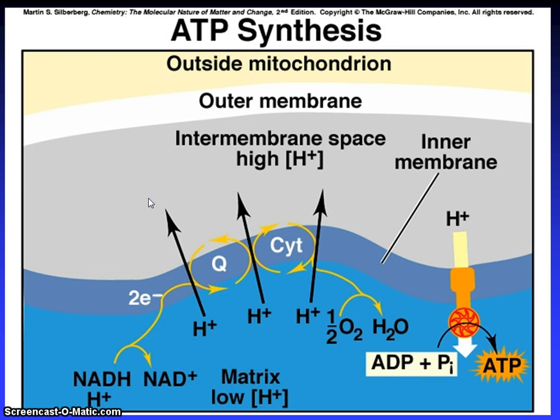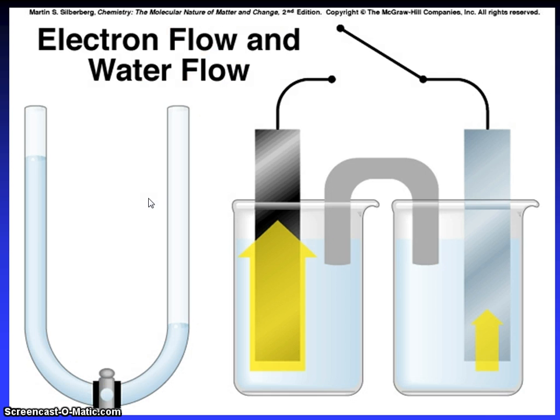ATP synthesis. Outside mitochondrion, outer membrane, intermembrane space, high H+, inner membrane. NADH, H+, NAD+, electrons, H+, coenzyme Q, H+, cytochrome, H+, half O2 in water, ADP plus Pi. You can see the flow. Electrons flow and water flow.